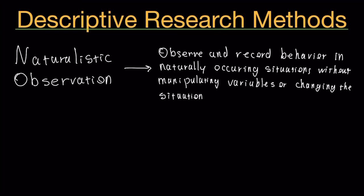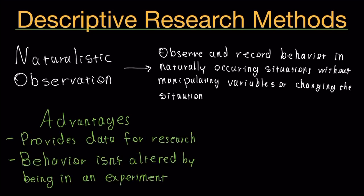You're not trying to control for variables or change the situation. You're just seeing how people would behave naturally. The advantages are that it provides data for research. The behavior isn't altered by being in an experiment because when people are in an experiment, they generally know they're in an experiment. But in naturalistic observations, the test subjects are unaware that they are part of a study or that you're observing them. They are just behaving as they would, so they wouldn't try to consciously change their behavior.